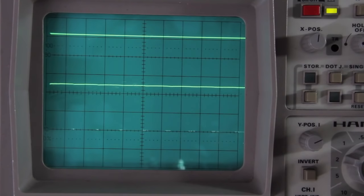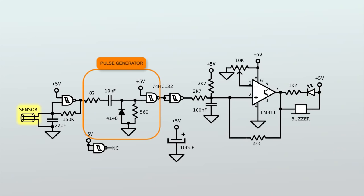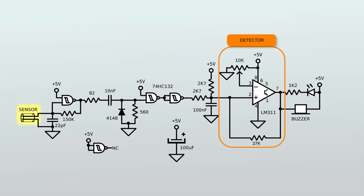This is the signal at the output of the pulse generator. After the pulse generator, the signal is forwarded to this stage, which converts the frequency into voltage, and then to this stage, which detects when the voltage crosses the threshold set by the potentiometer.